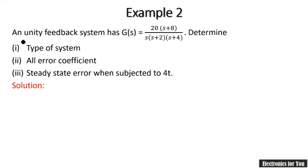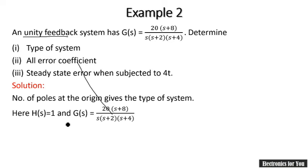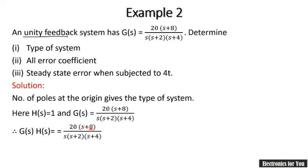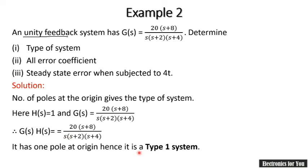The next problem: for a unity feedback system, G(s) is given, and again the same things are to be determined. Since it is a unity feedback system, H(s) = 1, so G(s)·H(s) = 20(s + 8) / [s(s + 2)(s + 4)]. Here, the power of s in the denominator is 1, so the number of poles at origin is 1, and therefore it is a Type 1 system.